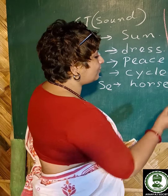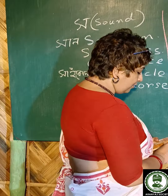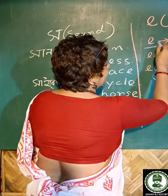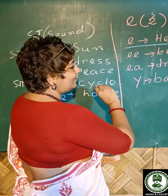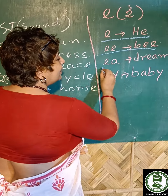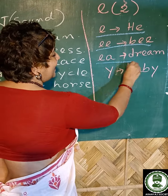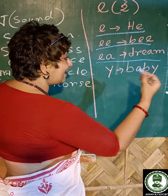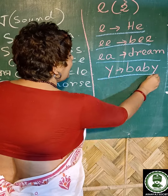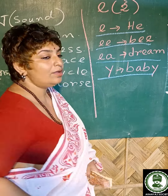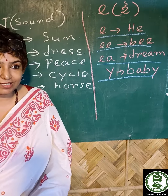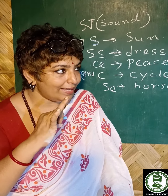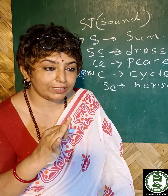This is a very simple example. This example is E, B, E, Dream, E, Y, Baby, E. So this is a simple example.